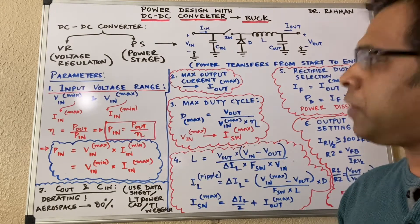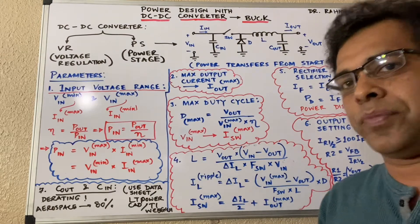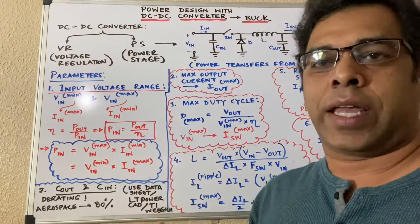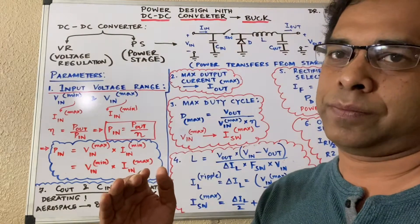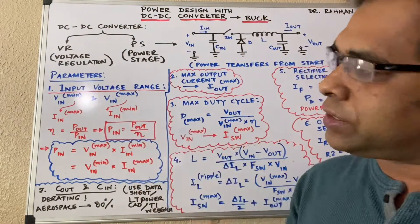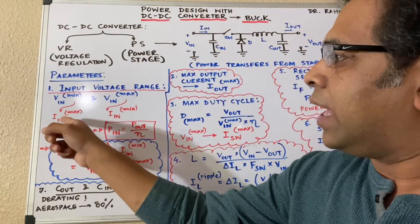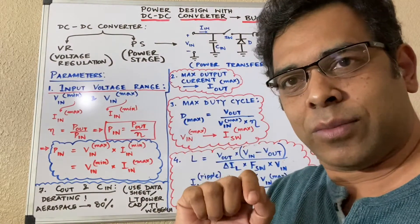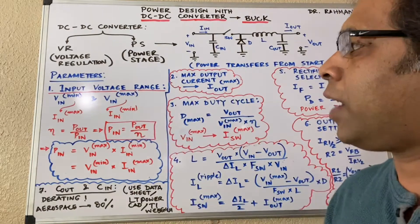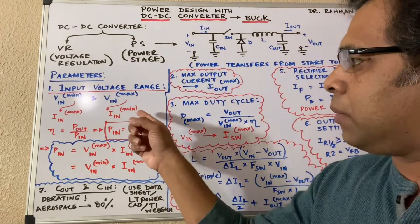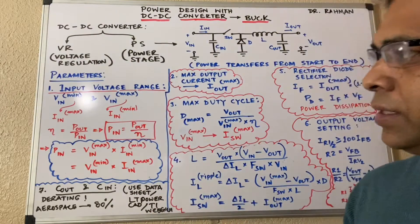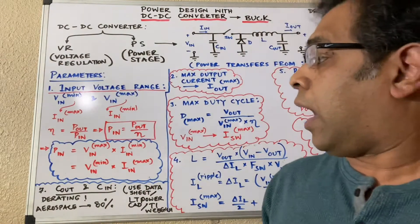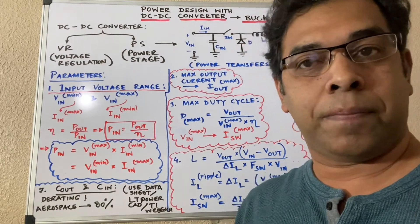Let's talk about some key parameters you need to calculate important features in your design. First is input voltage range — your input voltage has a minimum and maximum value. Interestingly, your maximum input voltage corresponds to your minimum input current.